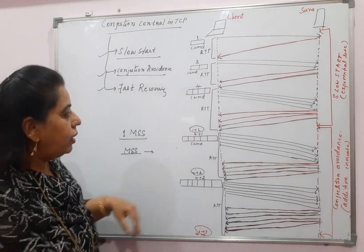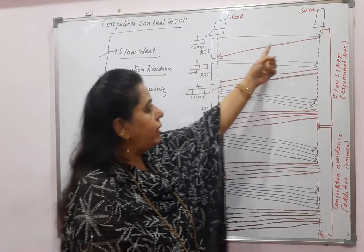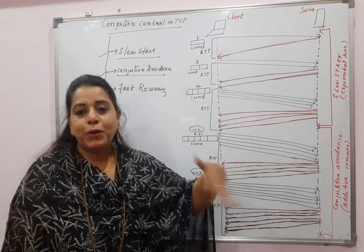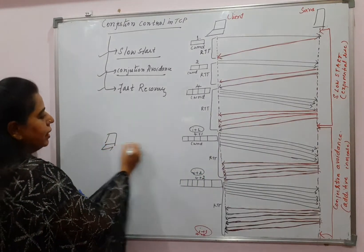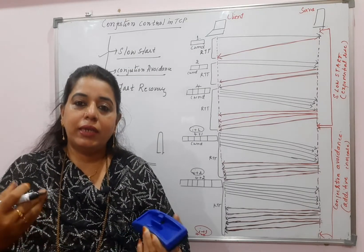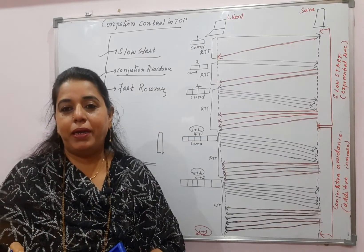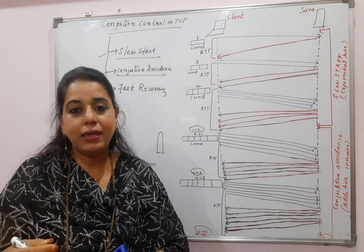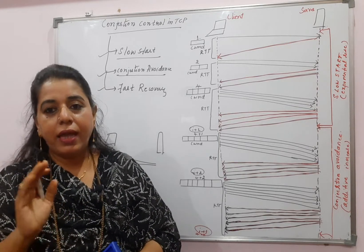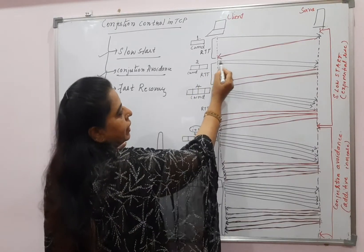With this assumption, let us look at the slow start algorithm. CWND value is 1, so the sender sends a segment of 1 MSS and the server responds with an acknowledgement (shown in red). The sender, upon immediately receiving the acknowledgement, is motivated to send more segments — it means the segment was received successfully with no loss. After receiving the ACK for the first segment, the client decides to send two segments at a time.